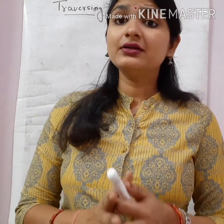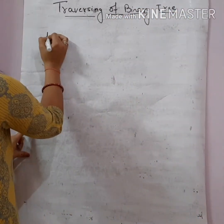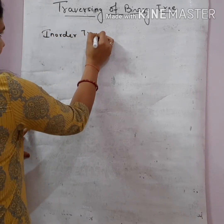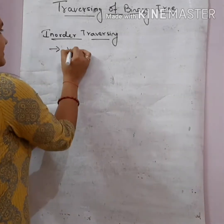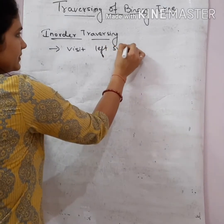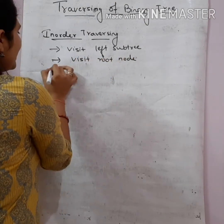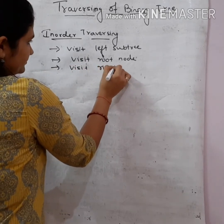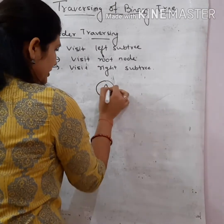In the previous video I discussed what is traversing and how we perform inorder traversing over the binary tree. Here I take one more example and try to understand how we perform inorder traversing. Let us recall all the steps: number one, first we visit the left subtree, then we visit the root node, and finally we visit the right subtree.